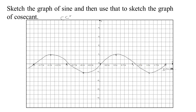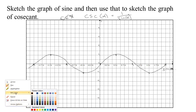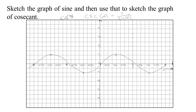Since the cosecant CSC of an angle is 1 over the sine, we can figure out what the graph of the cosecant is going to do. Cosecant is going to have trouble every time the sine goes to 0 — it's going to go essentially infinite as sine goes to 0. So I'm just going to draw in a vertical asymptote at these multiples of π, because that's where sine is going to be 0, and that's going to create vertical asymptotes for cosecant.